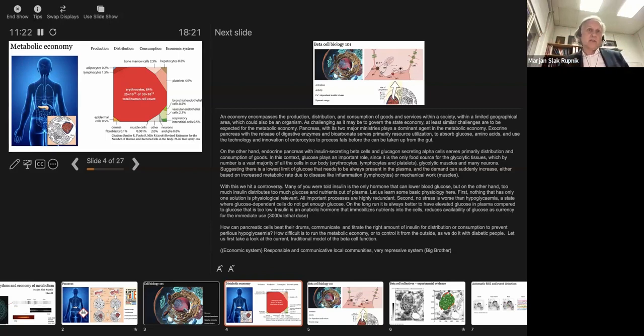What is metabolic economy? Like in the real-time economy, we basically have features that belong to production, distribution, and consumption of goods and services. It is rather challenging to govern the economy of state. And I would like to show you that basically, it's not much simpler to govern the economy of our organism. And pancreas is a very important agent to do that. So what means production in our body? First, we have to assimilate, absorb raw materials, what we do from the gut.